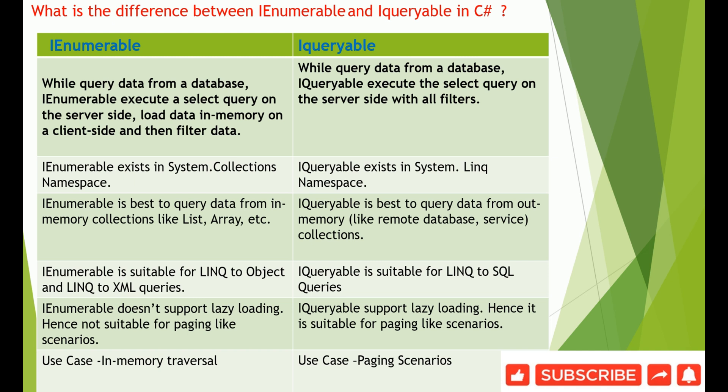IQueryable is best used when we want to query data from out-of-memory sources like a remote database or service collections. IEnumerable is suitable for LINQ to Objects and LINQ to XML queries, while IQueryable is suitable for LINQ to SQL queries. IEnumerable does not support lazy loading, so it is not suitable for paging scenarios, whereas IQueryable supports lazy loading, making it suitable for paging.